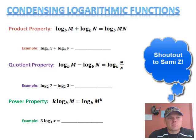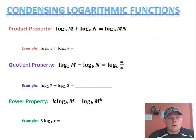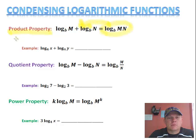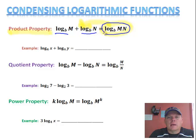If you'll notice, our first property is called the product property. Yesterday you worked with it going one direction, and today what we're going to do is we're going to actually have it already broken up — a log plus a log — and that's going to equal a combination. If you remember yesterday, when they were multiplied together, we split them up into addition, and that's what we're going to do today.